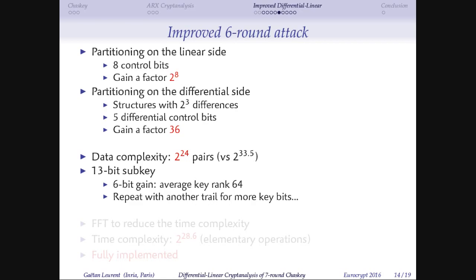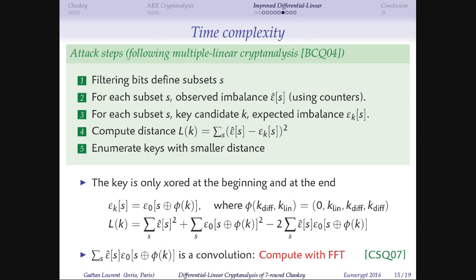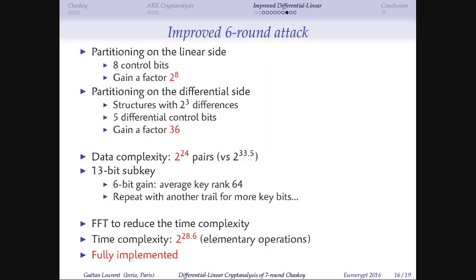The gain is better on the linear side than the differential side. In terms of time complexity, you perform guesses for the sub-key and compute the distance between measured bias and theoretical bias for each key guess. When you compute all those distances simultaneously, you can use a fast Fourier transform, which makes it very cheap. The time complexity ends up very close to the data complexity thanks to this FFT trick. The final six-round attack has time complexity around 2^29, much better than the basic differential linear distinguisher.